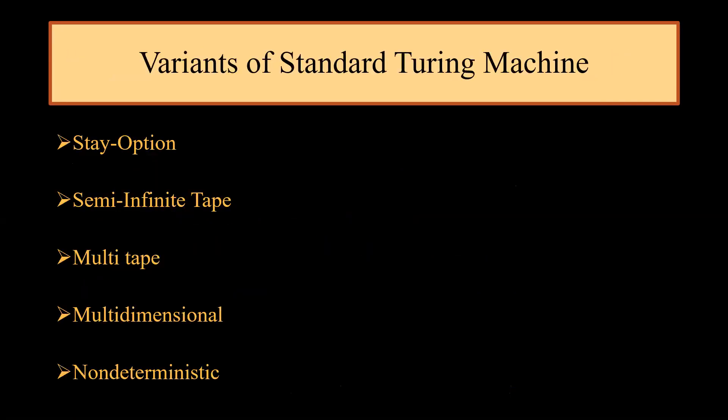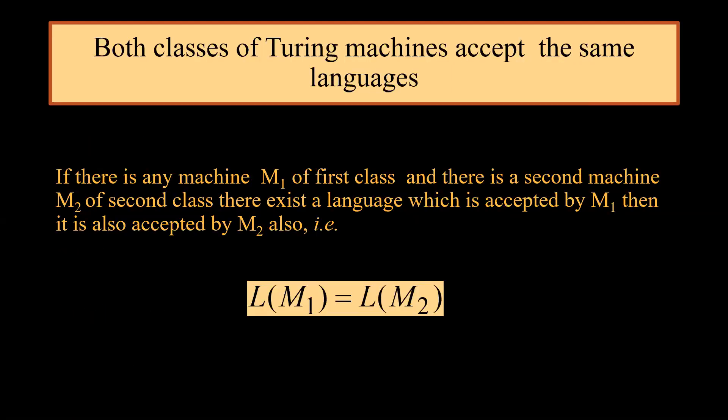Today we will be discussing five variants of standard Turing machine: stay option, semi-infinite tape, multi-tape, multi-dimensional, and non-deterministic. Let's be very clear that both classes of Turing machines, the standard Turing machine and the variants, always accept the same languages. If there is any machine M1 of first class and there is a second machine M2 of second class, there exists a language which is accepted by M1 then it is also accepted by M2. That means L(M1) = L(M2).